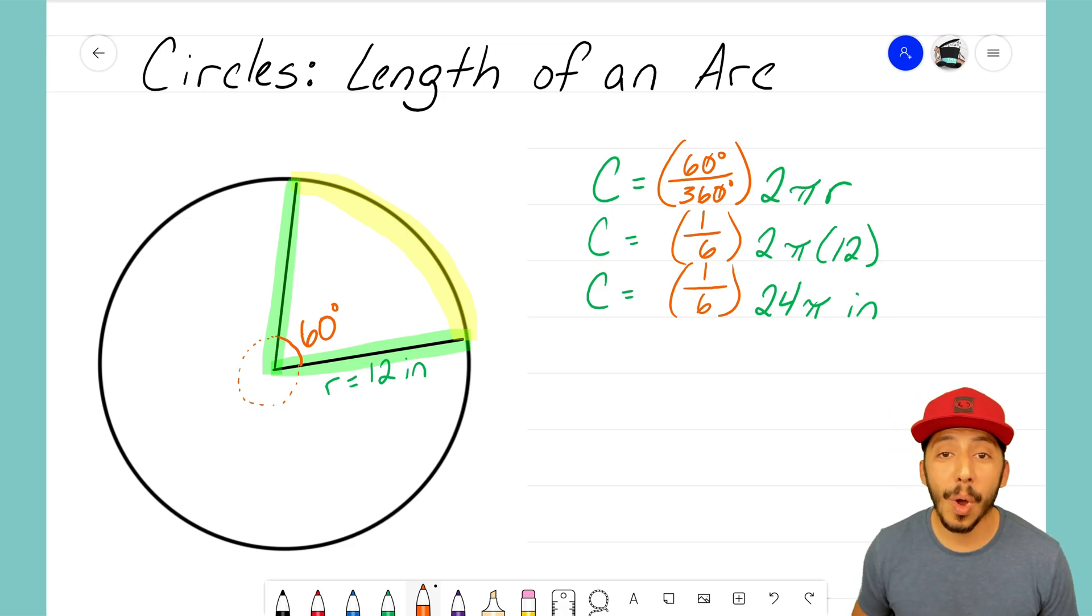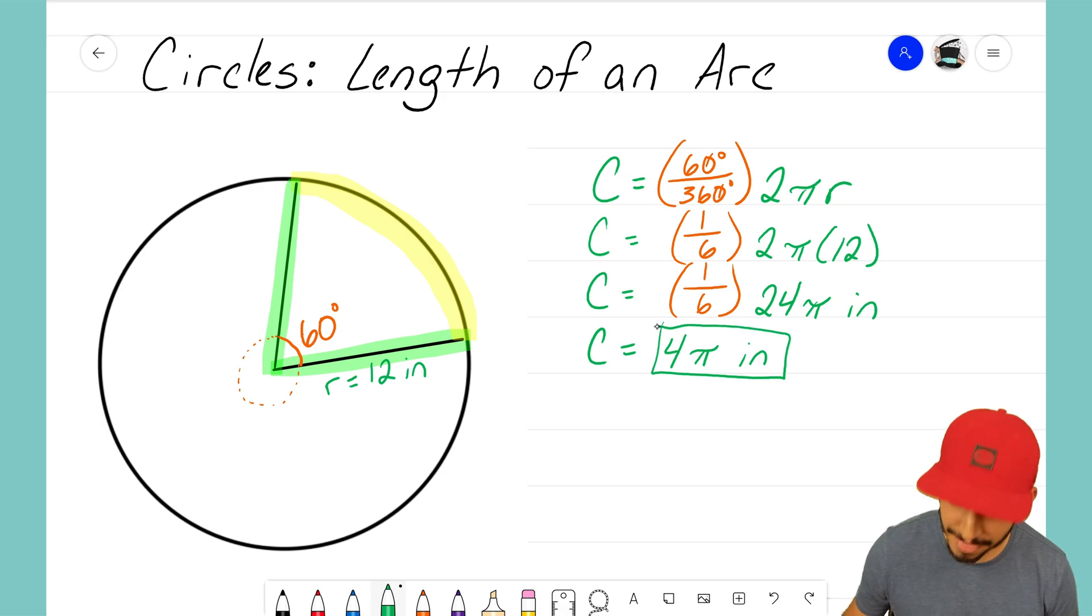Knowing that this portion that I'm interested in is a sixth of the actual circumference, so the final thing that I have to do here is take my total circumference, 24π, and I need to multiply it by 1 over 6, which really is the same thing as dividing by 6. And 24 divided by 6 is going to give us a length of that arc as 4π inches.